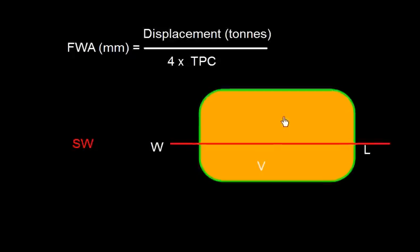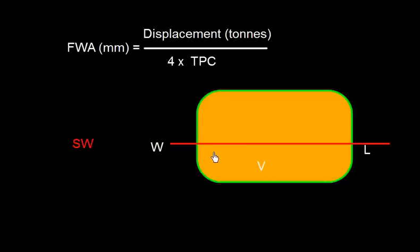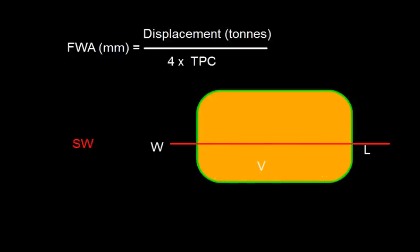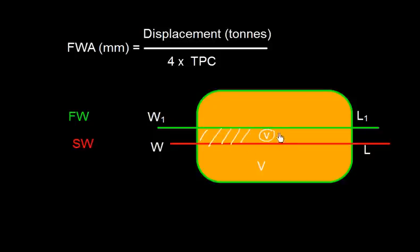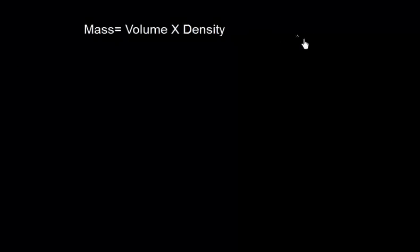Now let's look at the ship in a transverse direction while it is in saltwater. This is the waterline W and L, and this is the underwater volume, denoted by capital letter V.